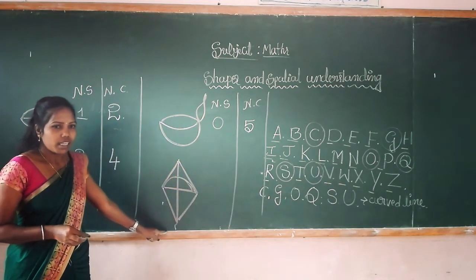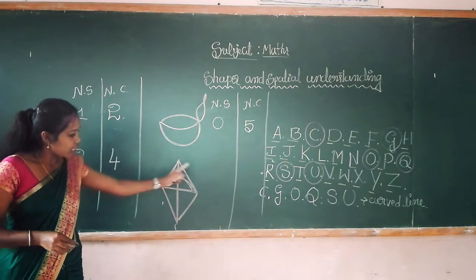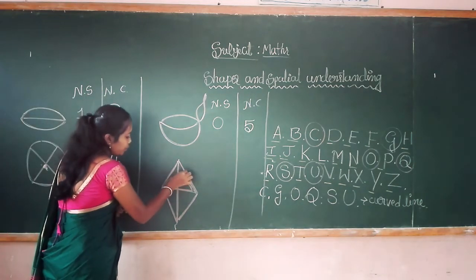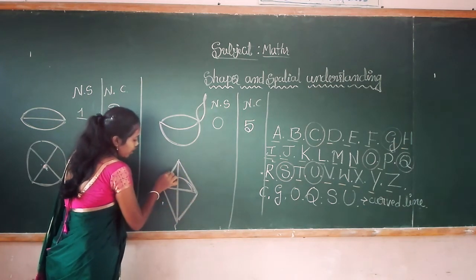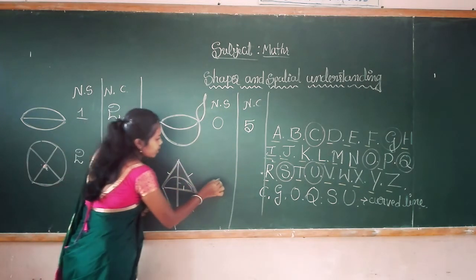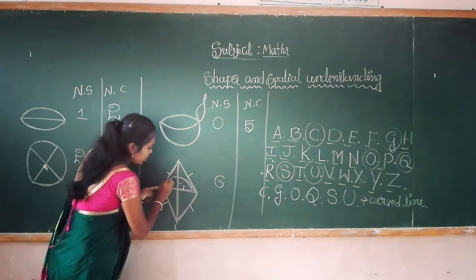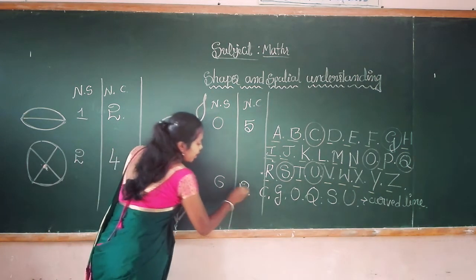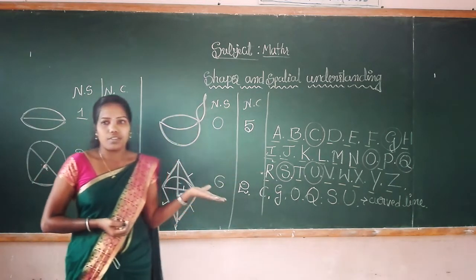Shall we go to the next one? What is this? Name the object please. Kite! How many straight lines and how many curved lines? Can you find out how many straight lines? One, two, three, four, five, six — number of straight lines is six. Then number of curved lines: one, two — number of curved lines is two. I hope you understand — straight lines and curved lines.